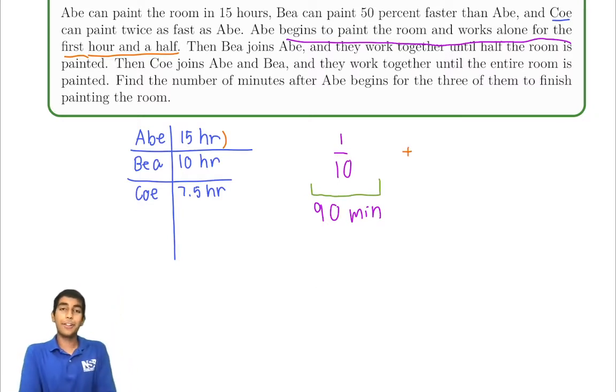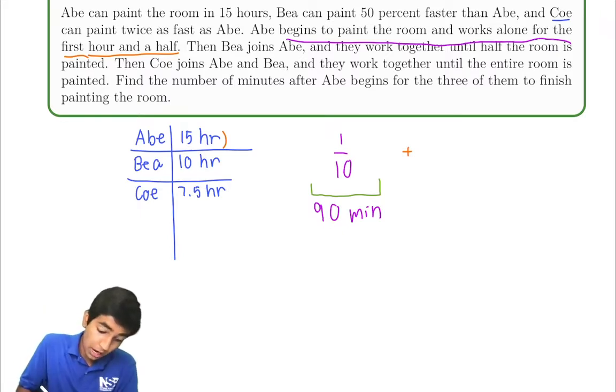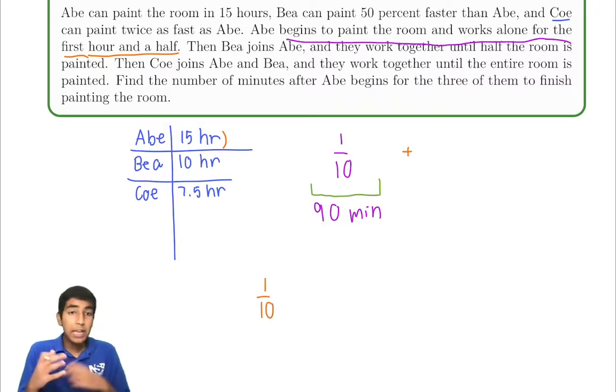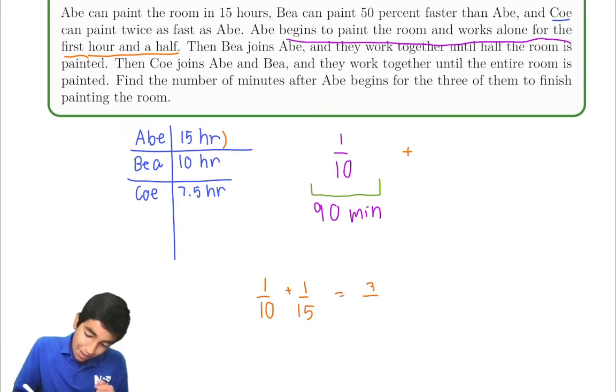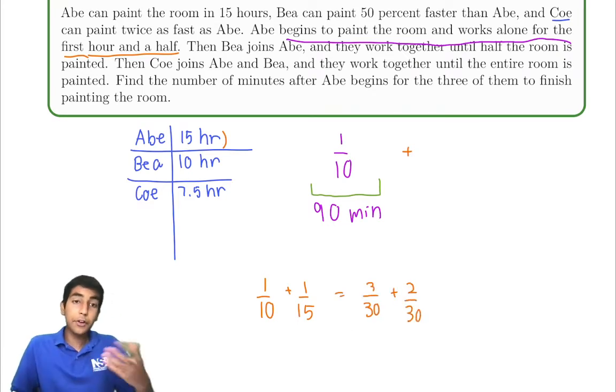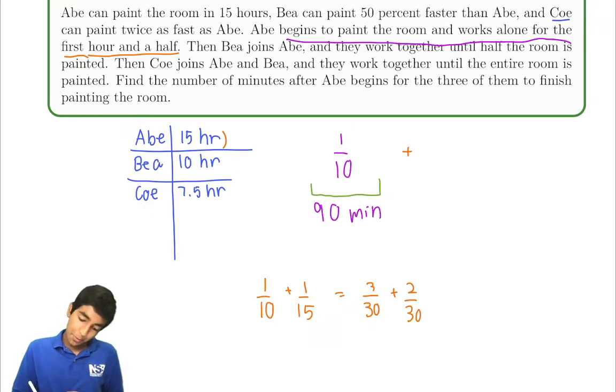Next, Bea is going to join Abe, and then they work until half the room is painted. So now, how fast does Bea work? Bea in one hour can paint a tenth of the room. But now Bea and Abe are working together. Abe can paint a fifteenth of the room in an hour. So together, they paint 3 over 30 plus 2 over 30 equals 5 over 30, which is a sixth of the room in an hour.